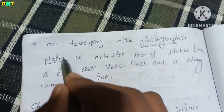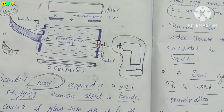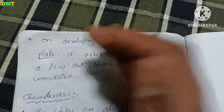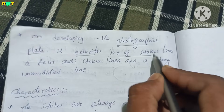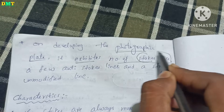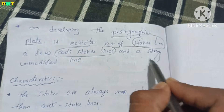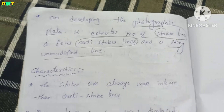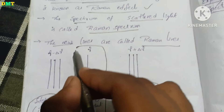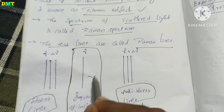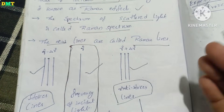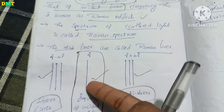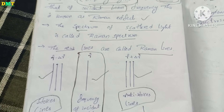The photographic plate is developed. It shows the Stokes lines, the anti-Stokes lines, and the strong unmodified lines. We first use the frequency of the incident light, and the photographic plate is developed showing all three types of lines.